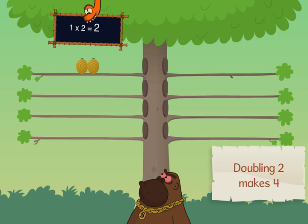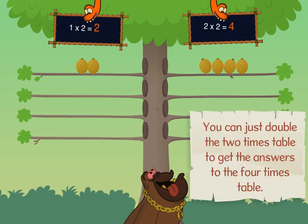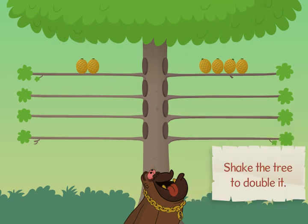Doubling two makes four. You can just double the two times table to get the answers to the four times table. Shake the tree to double it.